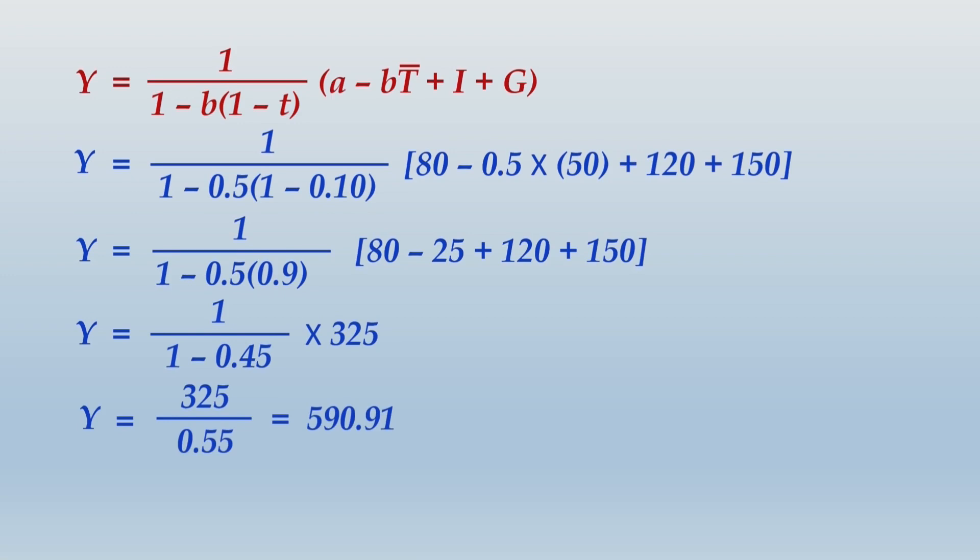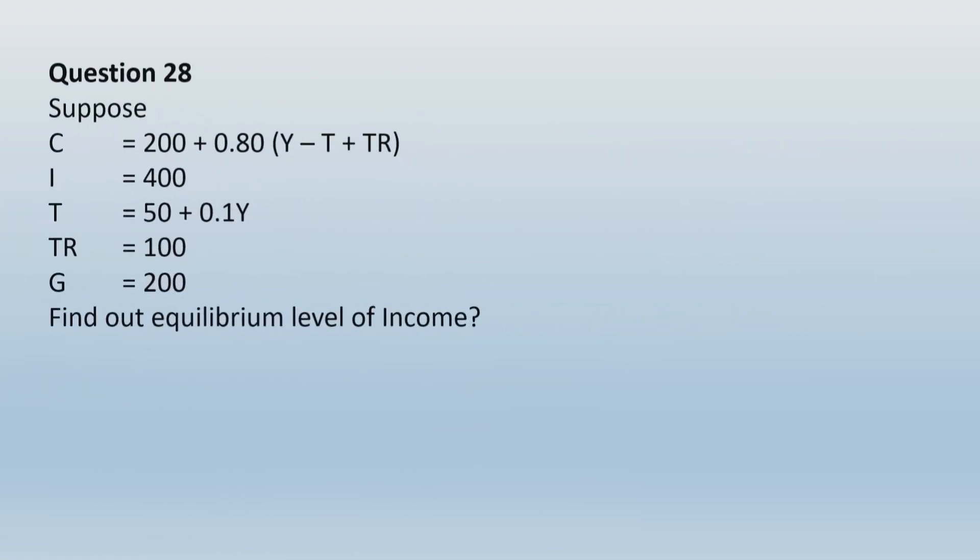Time to move ahead and take up another category of question given in your book as question number 28. Look at one thing here, it is a similar type of question. C is given as 200 plus 0.8 into Y minus T plus TR. The moment we read this equation we understand that there is involvement of tax and there are transfer payments as well. And look at the tax function, it is inclusive of an amount which is constant autonomous tax and there is a portion of tax which is dependent on your income. So 0.1 into Y indicates that portion of your tax which is related to income, so 10 percent of your income is the amount of variable tax and the constant amount of tax is 50.